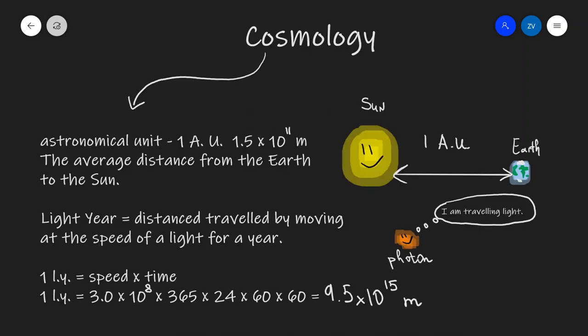Let's get started with some units. First off, an astronomical unit is the average distance from the sun to the earth. This is about 150 million kilometers, or 1.5 times 10 to the power of 11 meters in standard form.